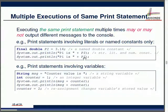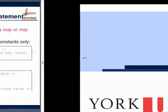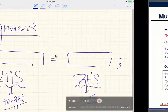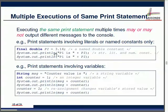After changing counter from 1 to 2 with an assignment, the same print statement will now output 'counter is 2' — that's the latest value for the counter. The stored value in the placeholder was replaced, so the output changes accordingly.